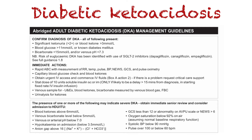Some symptoms and signs of DKA include abdominal pain, Kussmaul respiration, pear drop smelling breath, polydipsia, polyuria, and clinical dehydration. Patients should be managed using an A to E approach. Serum and urine glucose and ketone levels should be measured and a VBG should also be done. DKA is managed by giving the patient lots of IV sodium chloride — one litre in the first hour — along with IV rapid acting insulin at the rate of 0.1 unit per kilo per hour. Long acting subcutaneous insulin should be continued. Potassium chloride is also added to the fluids if there is hypokalemia.